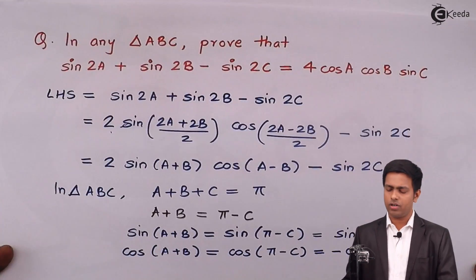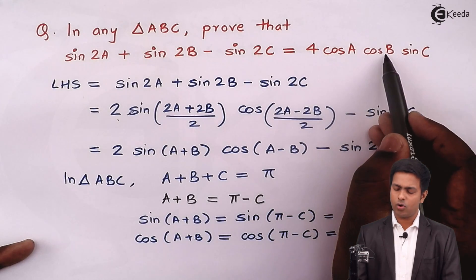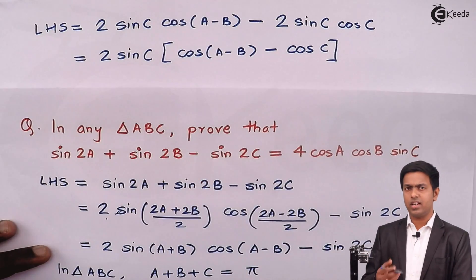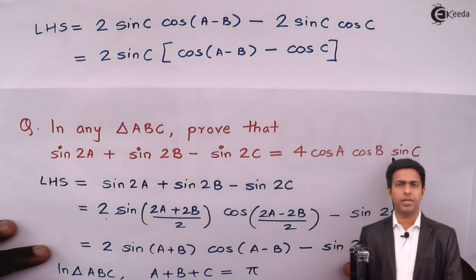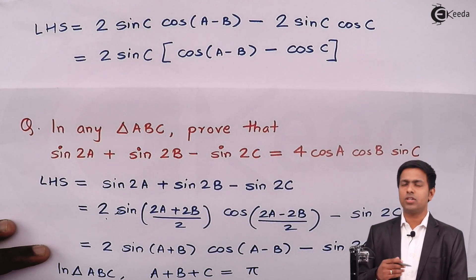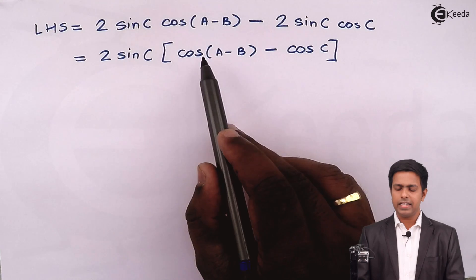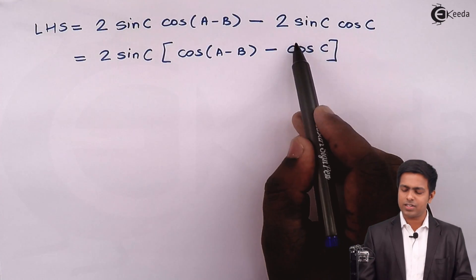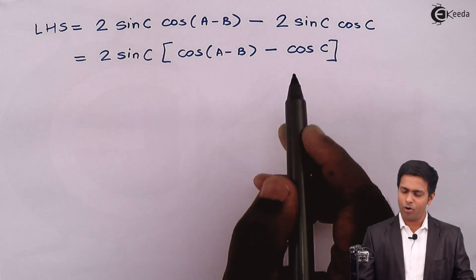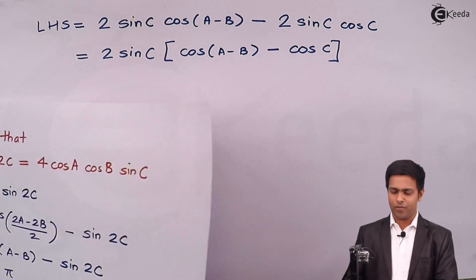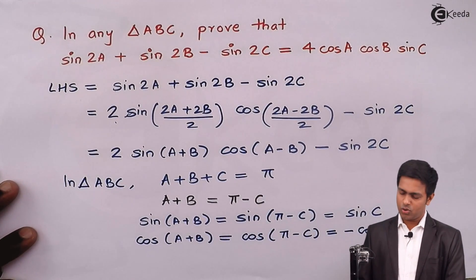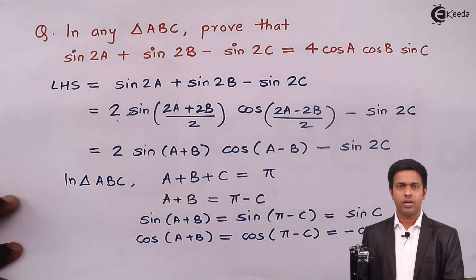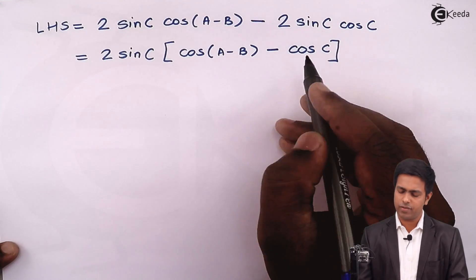Observing the right hand side, we want 4cosA cosB sinC. We already have sinC and the factor 2, so we still need 2cosA cosB. To get that, we convert cosC in terms of A and B. Since we established that cos(A plus B) equals minus cosC, it follows that minus cosC equals cos(A plus B). Substituting this into the bracket replaces minus cosC with cos(A plus B).